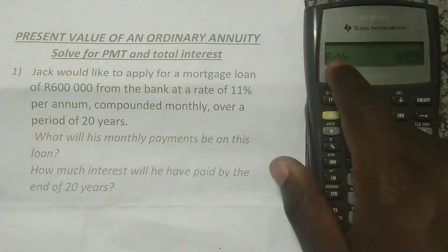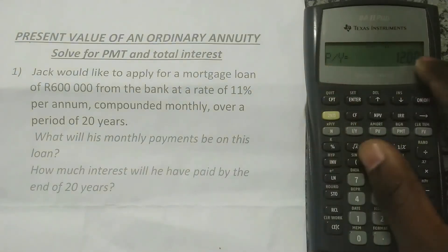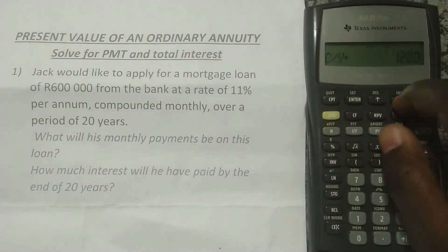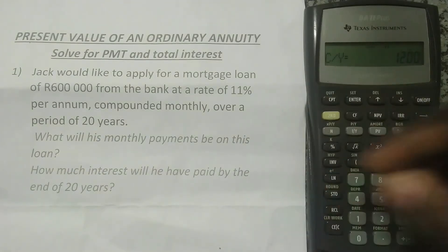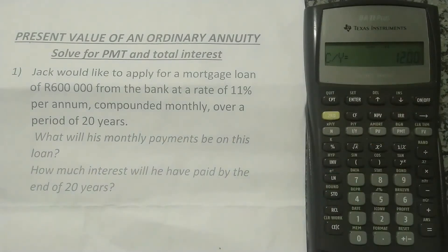You can see P/Y equals 12. If you press the down arrow, you can see C/Y — compoundings per year — also equals 12. Then press C/CE to clear the screen.